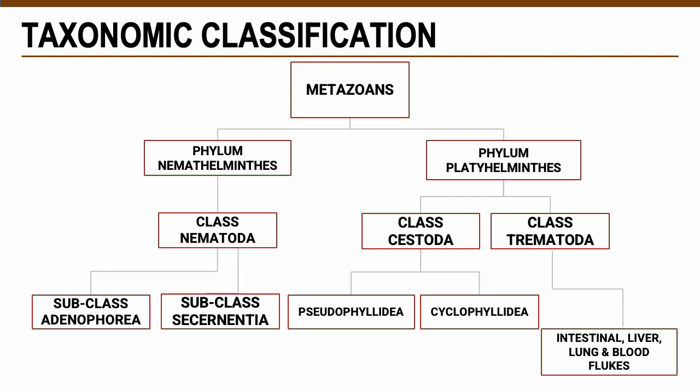Recalling our introduction to parasitology, metazoans are eukaryotic multicellular organisms belonging to the kingdom Animalia — examples include humans and animals generally, as well as clinically significant parasites in our course. Metazoans are divided into two phyla: phylum Nematelminths — 'nema' meaning round, 'helminths' meaning worms, so roundworms — and phylum Platyhelminthes — 'platy' meaning flat — so flatworms.